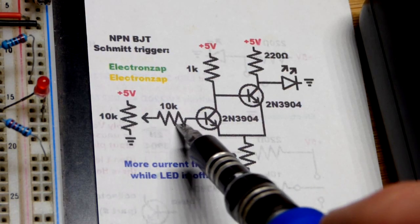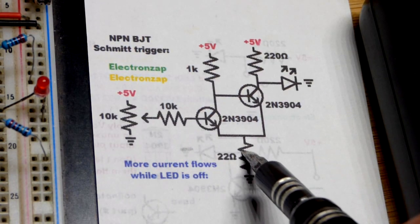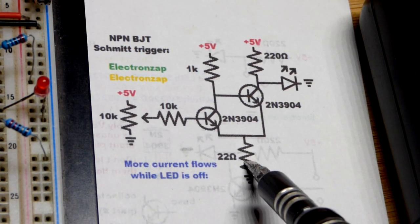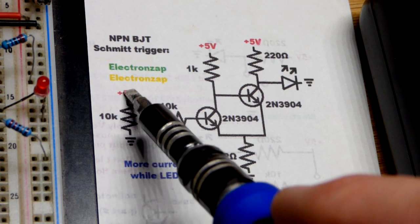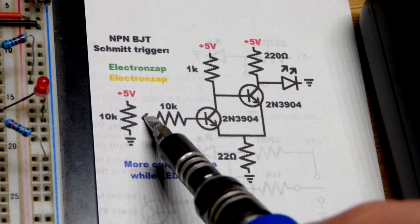That would be fine instead. But in any case, we need to limit current when we get to the full positive supply right there. If we don't just add resistance up there to begin with.